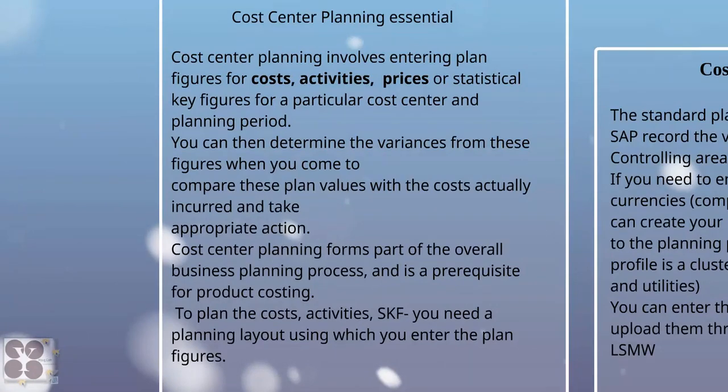Cost center planning involves entering plan figures for cost, activities, prices, or statistical key figures for a particular cost center and planning period. You can then determine the variances when you compare these plan values with costs actually incurred and take appropriate action. Each cost center will have its own individual planning. For example, a cost center created for an engineering department — you want to know how much cost was planned at the beginning of the year, how much was actually spent, what activities were performed, and what revenues were generated.